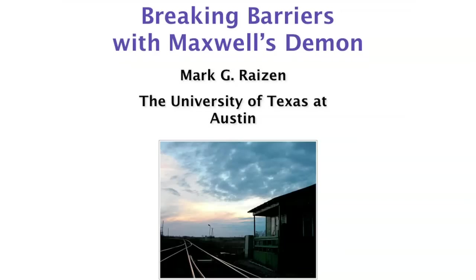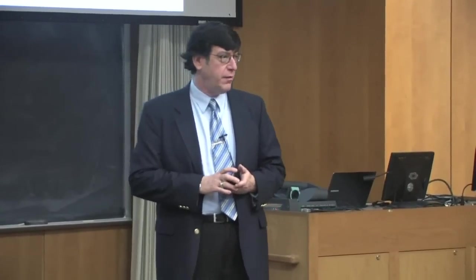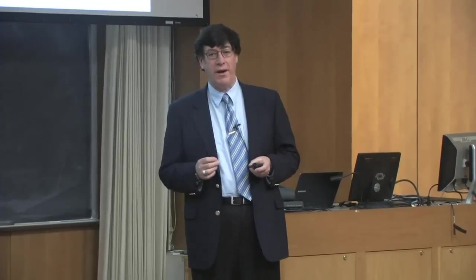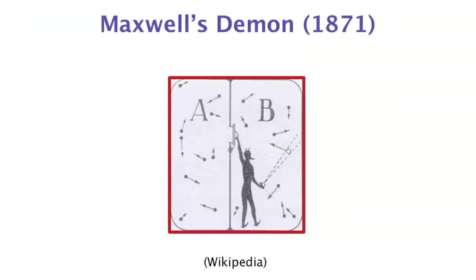Starting with Maxwell — he needs no introduction. The best thing I can say about James Clerk Maxwell is that he was Einstein's hero. He lived a very short life, only 48 years old when he died, and towards the end of his life he started to think about questions of thermodynamics and statistical mechanics. He left us a puzzle that became known in the literature as Maxwell's demon.